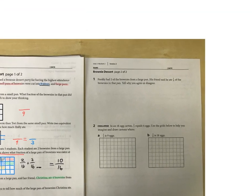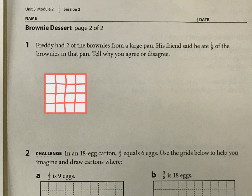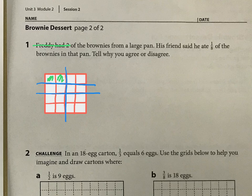And let's go have a look here. And what do we have here? All right, we're dealing with a large pan again. And Freddie had two of them. So his friend said he ate one eighth of the brownies in that pan. Do you agree or disagree? And it might be useful here to try to cut this into eight pieces. That's not going to work. And see if that's true. Is it true? Do you agree or disagree?